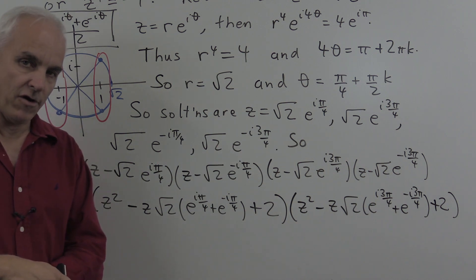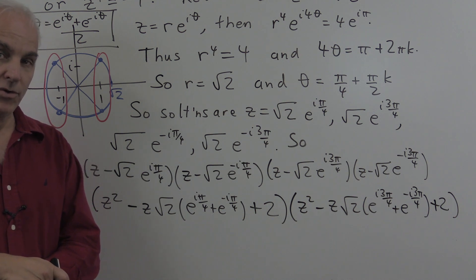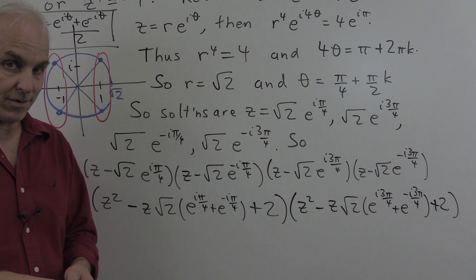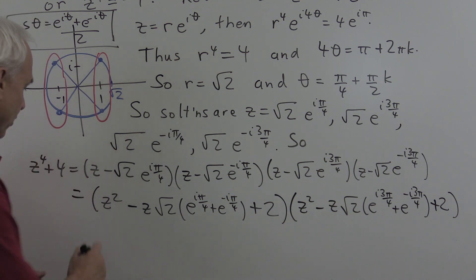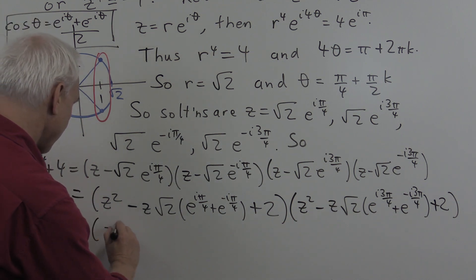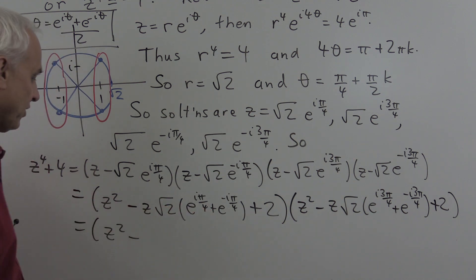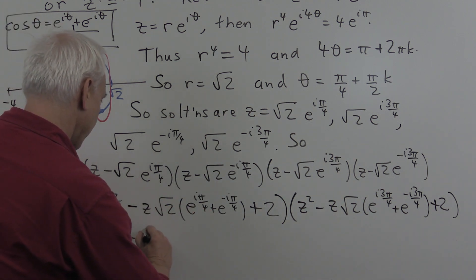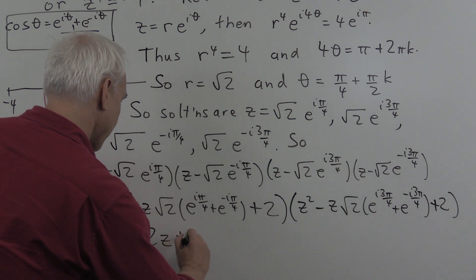Well, what is cosine of pi by 4? It's 1 over root 2. If we multiply it by 2, we get root 2. So this root 2 and this root 2 combine to give us minus 2z plus 2.